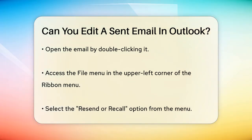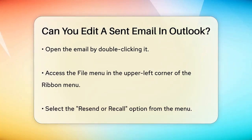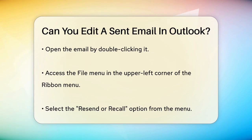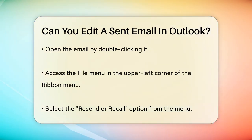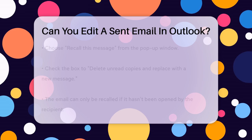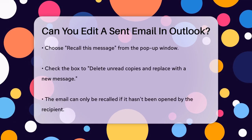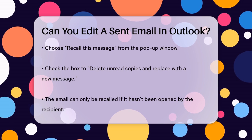To edit a sent email, you need to go to the Sent Items folder and double-click the message you want to edit. Once the message is open, go to the File menu located in the upper left corner of the ribbon menu. Here, you'll find the Resend or Recall option. When you select the Recall this message option, a pop-up window will appear.